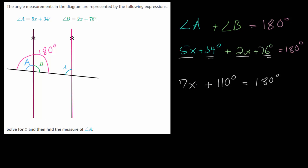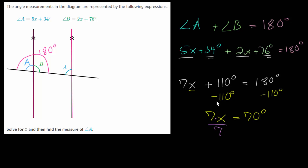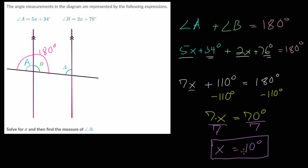We have a two-step equation. To solve for x, let's cancel out the addition first by subtracting 110 on each side. So we get 7x equals 180 degrees minus 110 degrees, which is 70 degrees. Lastly, to cancel out the multiplication, we divide each side by 7. 70 degrees divided by 7 is 10 degrees, so x equals 10 degrees.